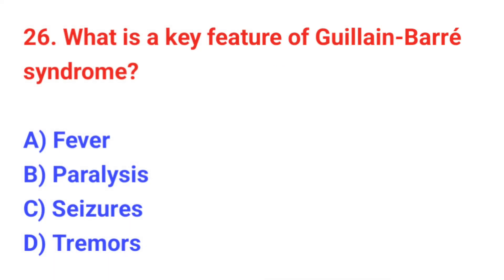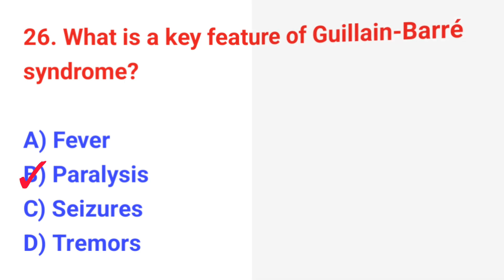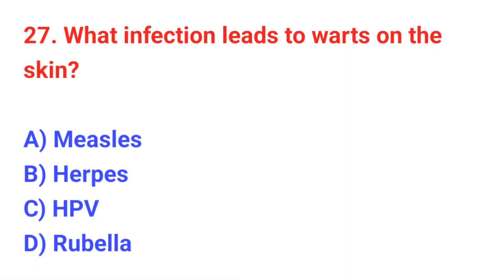Question number 26: What is a key feature of Guillain-Barré syndrome? The correct answer is B: Paralysis. Question number 27: What infection leads to warts on the skin? The correct answer is C: HPV.